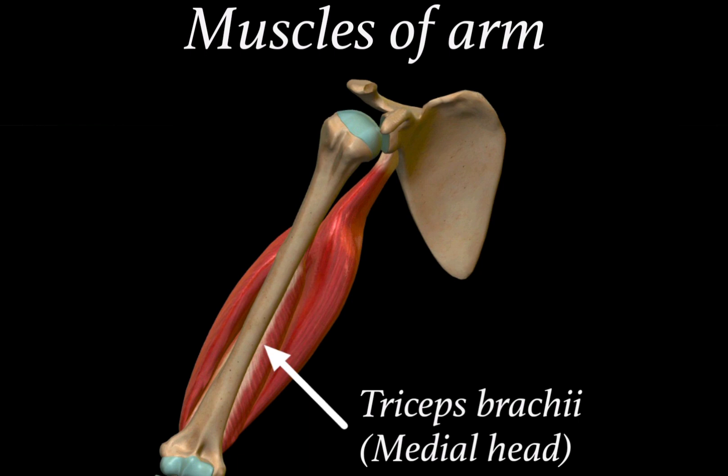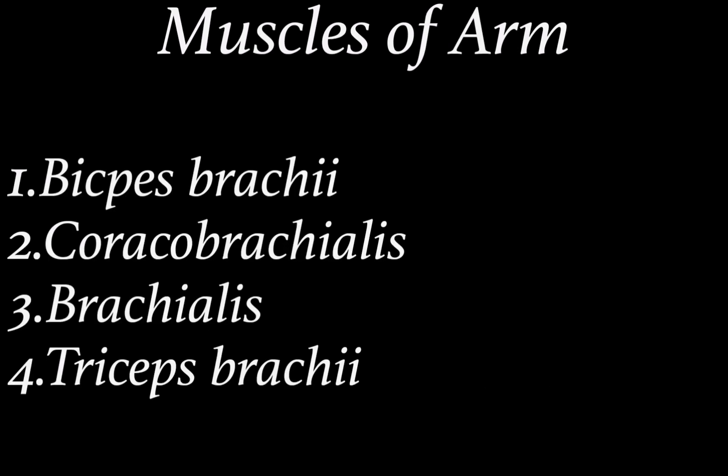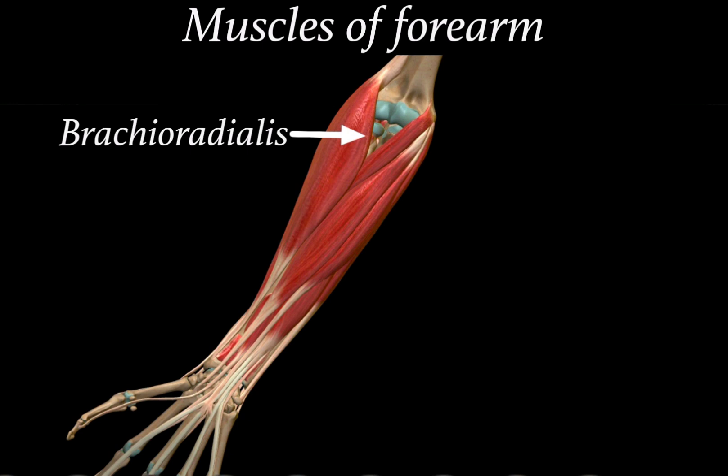The medial head of the triceps brachii is located anteriorly to both the long and lateral heads. Hence the muscles of the arm are biceps brachii, coracobrachialis, brachialis, and triceps brachii.